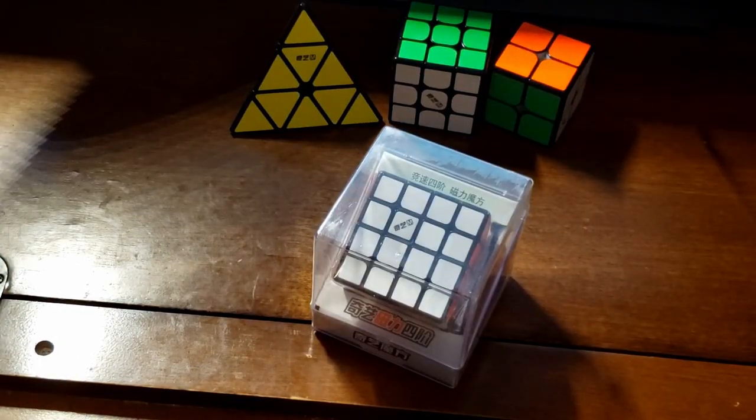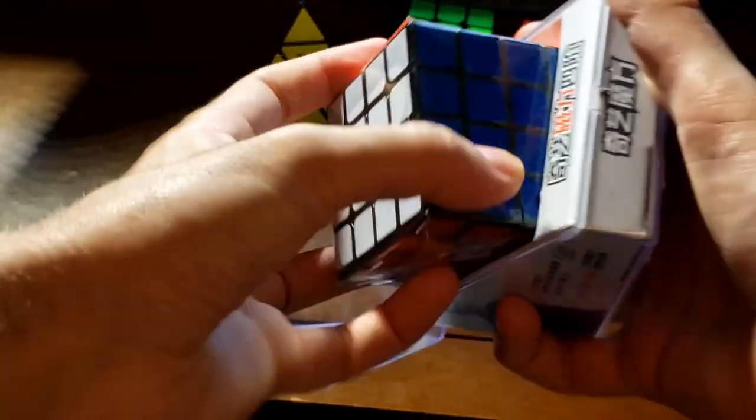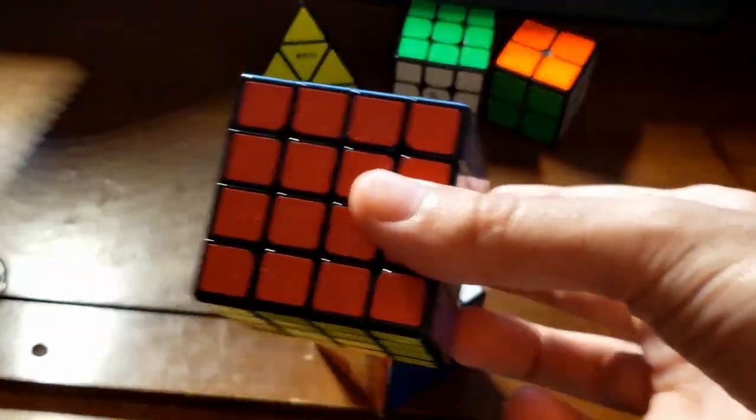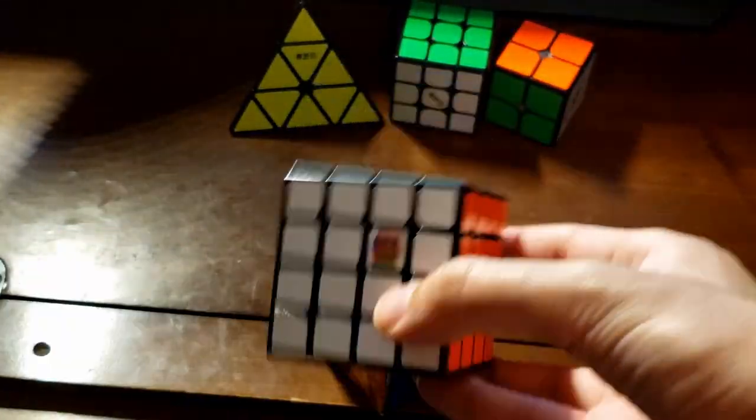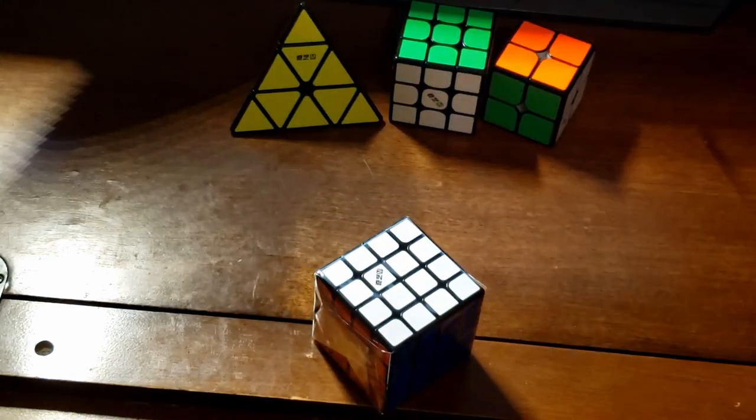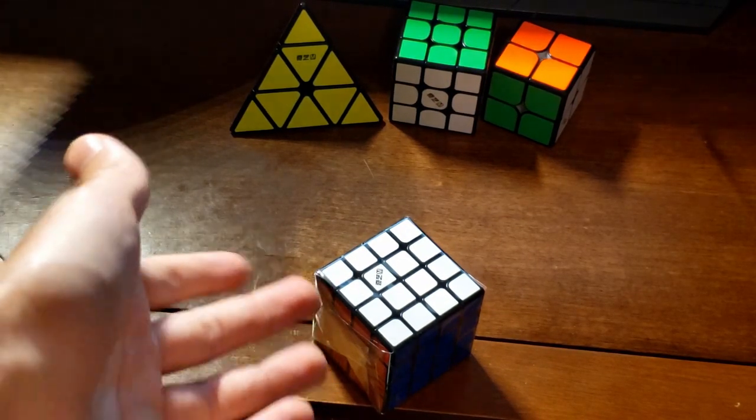Alright it's time for 4x4. My current 4x4 main is an Aosu Worm. Oh boy come on! And you know what? I like it very much. Do I think the MS can take over this spot? Probably not. But I thought that with the other puzzles as well and they turned out pretty good so let's see how this puzzle is.